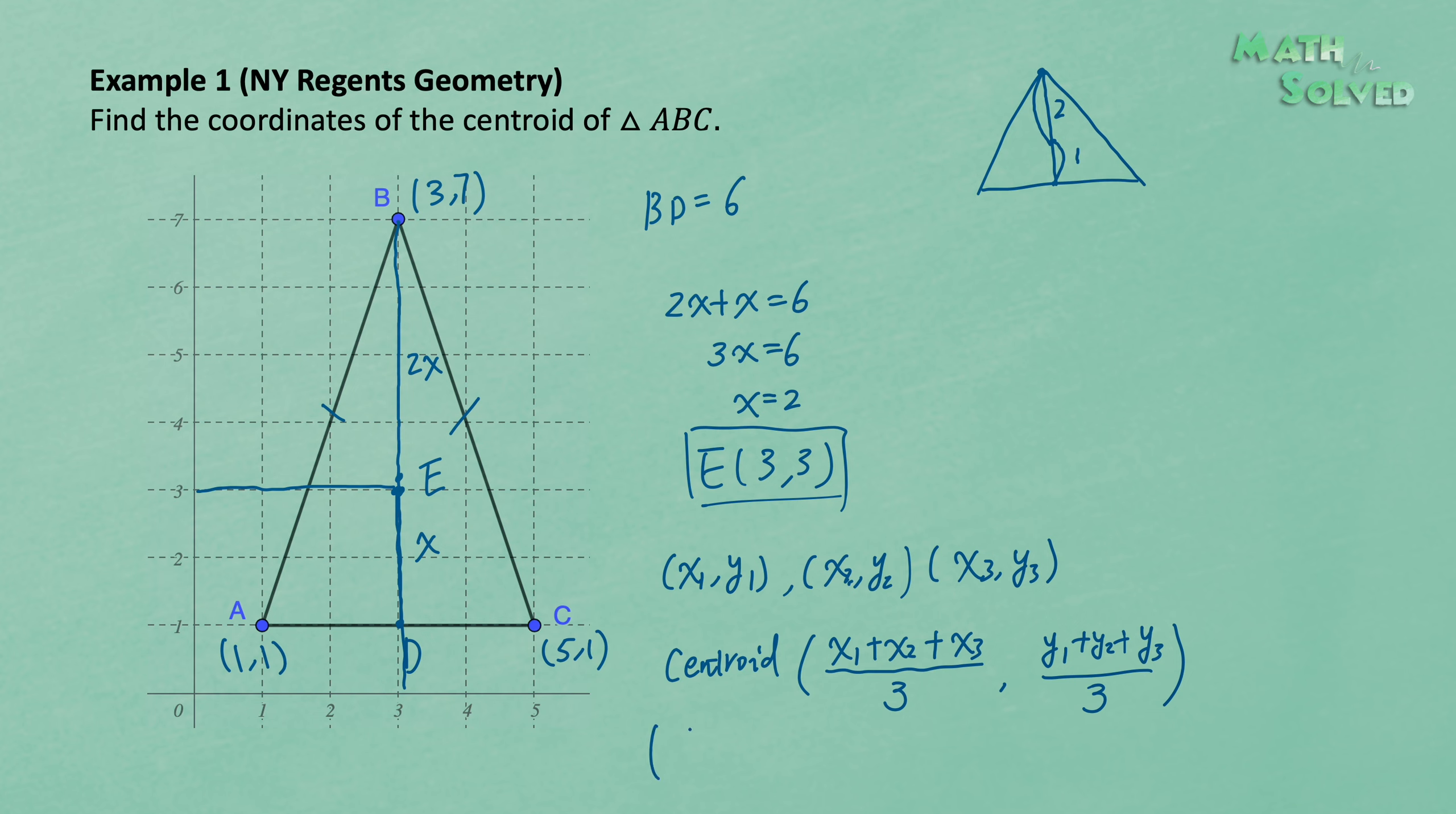And therefore, the centroid for triangle ABC is 1 plus 3 plus 5 divided by 3, and 1 plus 7 plus 1 divided by 3.